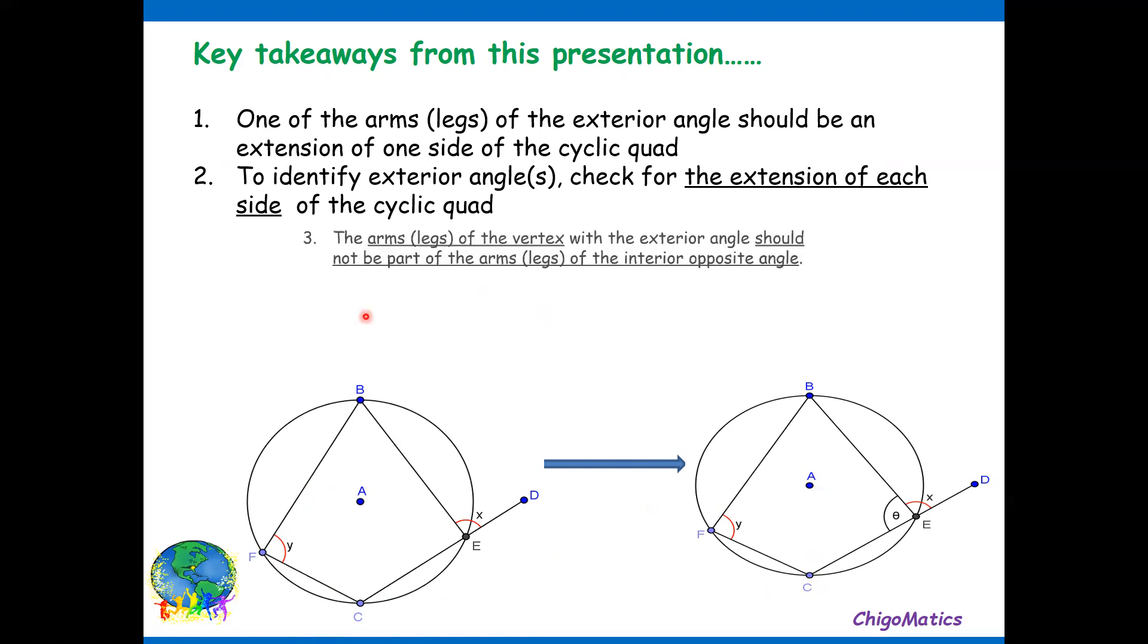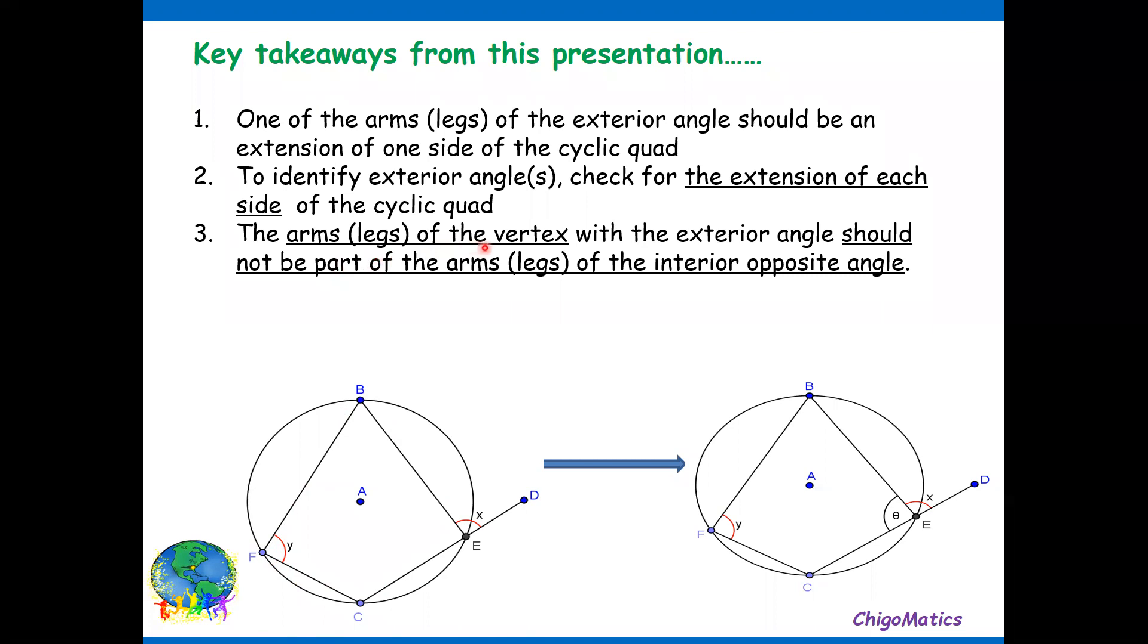Going forward, again, the arms or legs of the vertex with the exterior angle should not be part of the arms or legs of the interior opposite angle. So the legs, like this one, is the leg of angle x, and this one is another leg for angle x. So the two sides of the cyclic quad should not contribute to the legs of the interior opposite. That is the tricky thing about the exterior angle of a cyclic quad.